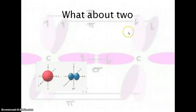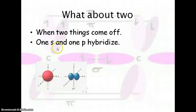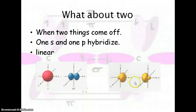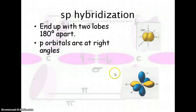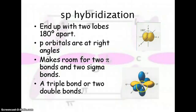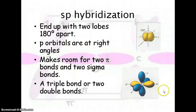What if you only have two things coming off? That's just going to be one s and one p — sp hybridization. It gives us a linear formation with two lobes on either side. Looking at a carbon atom, the two remaining p orbitals that were not hybridized stay, and the s and p combine into the sp hybridized orbital. The non-hybridized p orbitals remain at a right angle, while the two hybridized sp orbitals are 180 degrees apart.